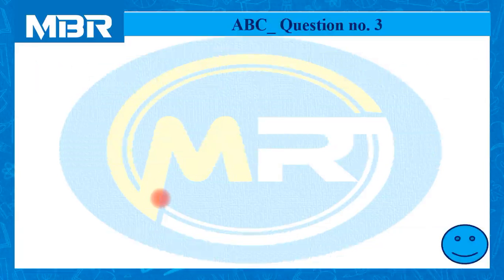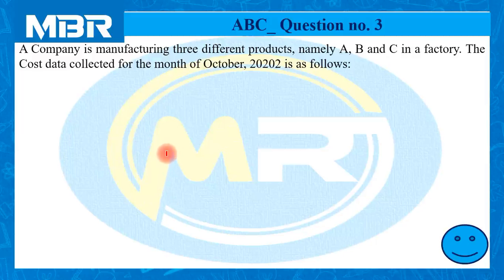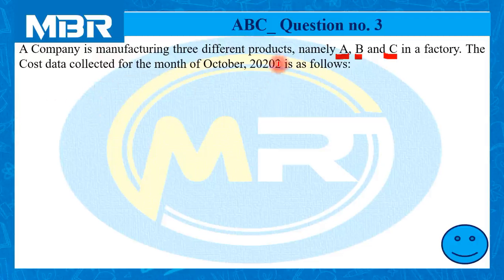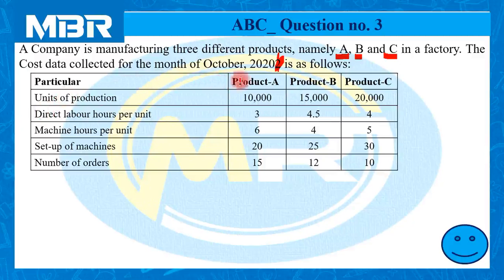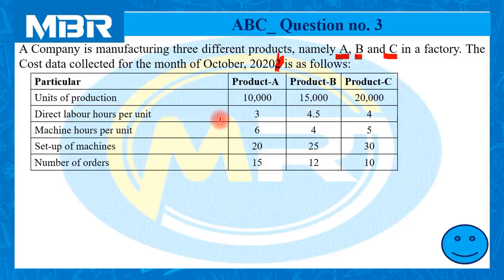Let us understand the question first. A company is manufacturing three different products, namely A, B, and C in a factory. The cost data collected for the month of October 2020 is as follows. Units of production: 10,000 for A, 15,000 for B, and 20,000 for C. Direct labor hours per unit: for product A, 4.5 for product B, and 4 hours for product C. Machine hours per unit: 6 for product A, 4 for product B, and 5 for product C.